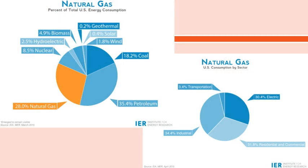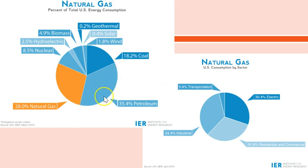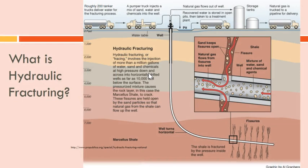What do we use natural gas for? Industrial processes, residential and commercial heating and cooking, electricity generation, and natural gas vehicles — UPS uses them, and some bus fleets run on natural gas. As of 2015, petroleum still takes the lion's share of energy use, but natural gas is right behind it, followed by coal in third place. Now let's talk about fracking — basically, you go in and create fissures in the rock so gas can escape, by pumping in a highly pressurized fluid to fracture the rock layers.